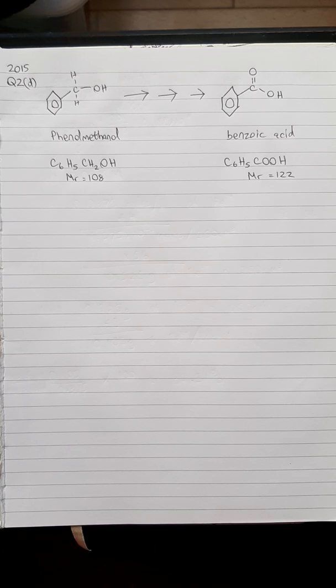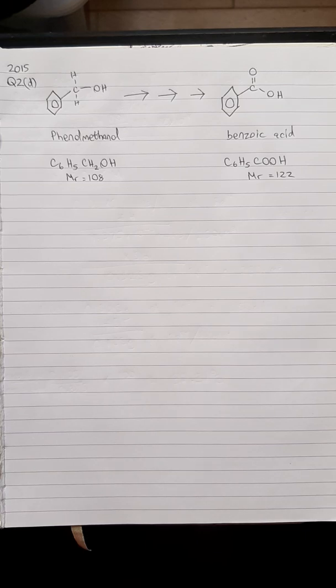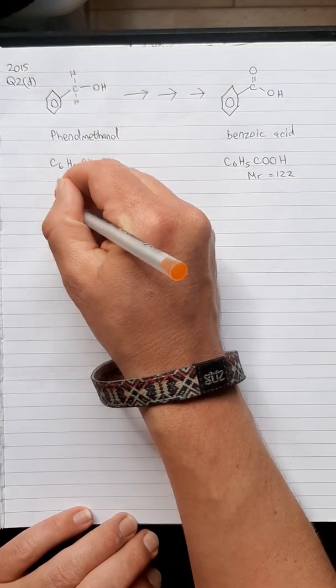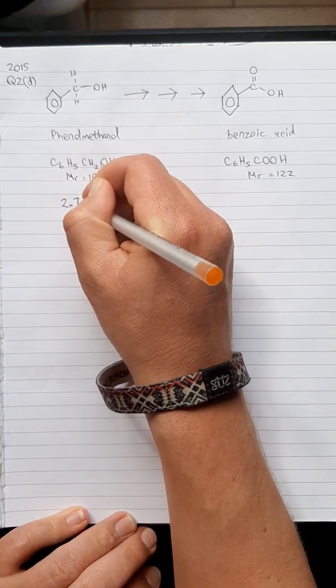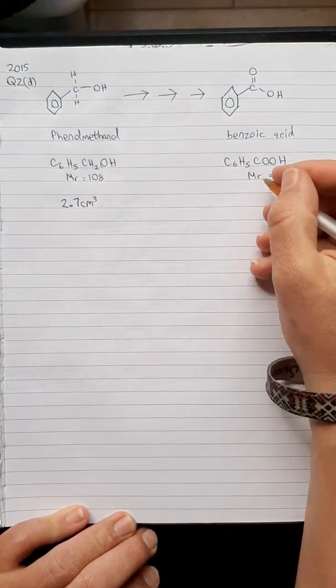Looking at part D of this 2015 question 2, we're looking at the percentage yield. It says a student oxidized 2.7 cm³ of phenylmethanol with a density of 1.04 g/cm³ and obtained 1.83 grams of benzoic acid after recrystallization. Lots of information in that first sentence. We're starting with 2.7 cm³ of the phenylmethanol.